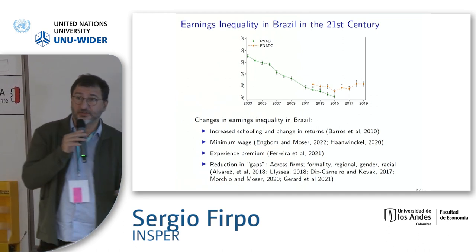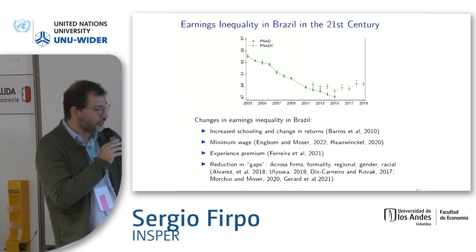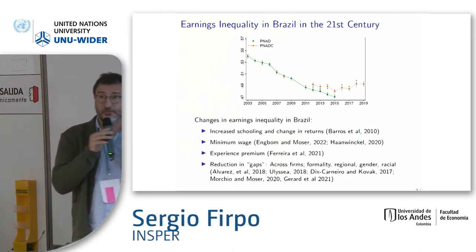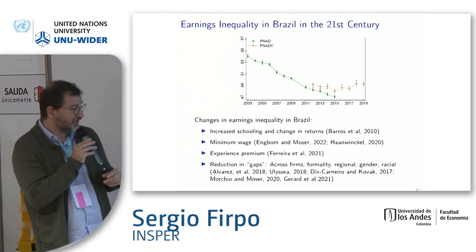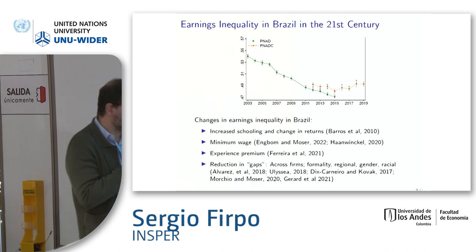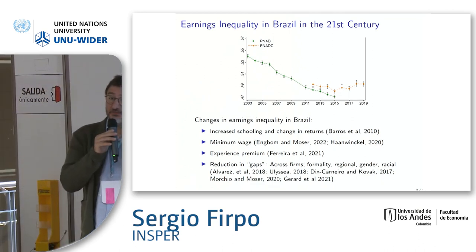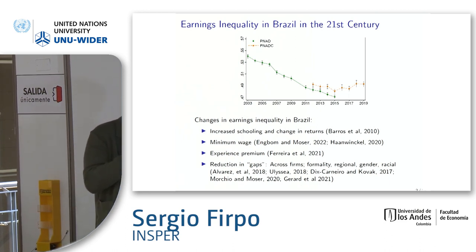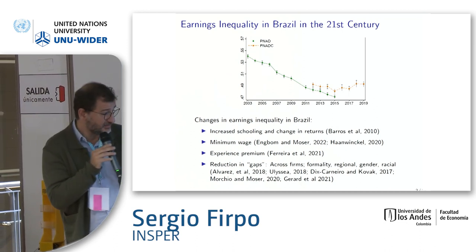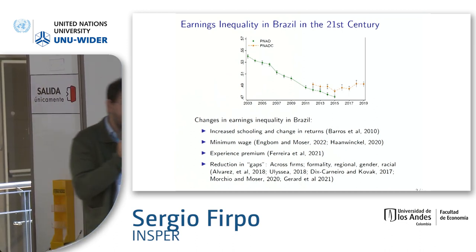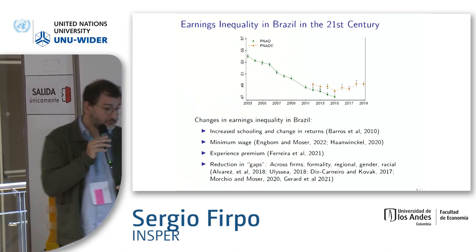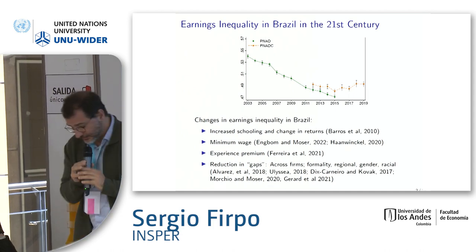The literature on Brazil has shown that returns to education has been an important factor explaining this decline, as well as minimum wage, especially during this period. Experience wage gaps also got tighter — something I did with Chico and Julian Messina — and many other gaps that were reduced during this period also explained the reduction in inequality.